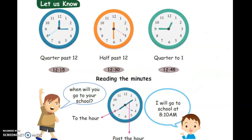Quarter past twelve means twelve fifteen. Half past twelve means twelve thirty. Quarter to one means twelve forty-five. Reading the minutes: when will you go to your school? I will go to school at eight ten AM.